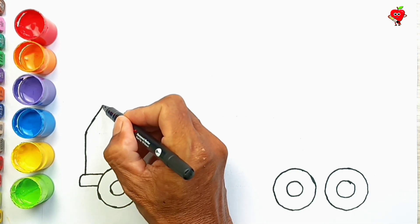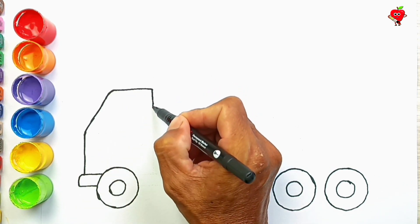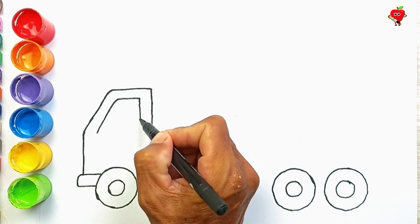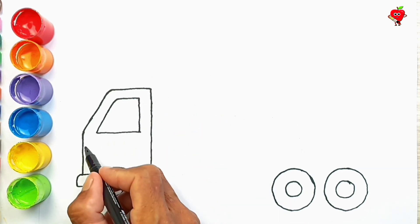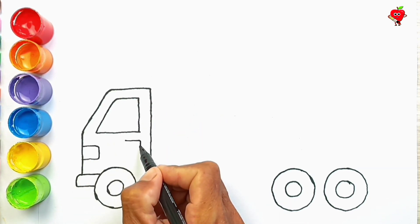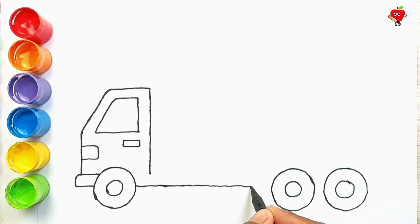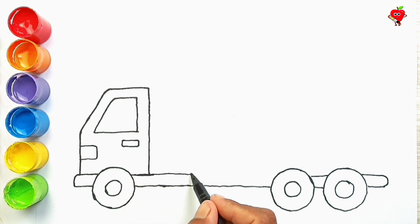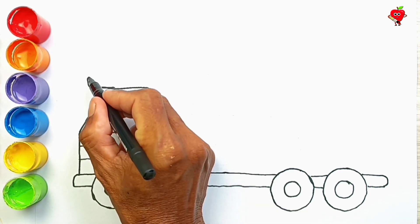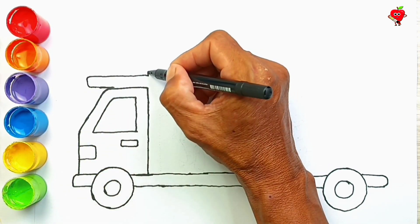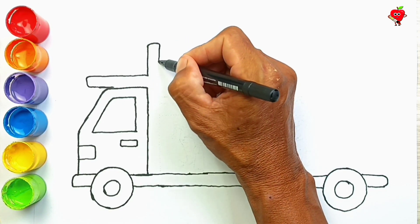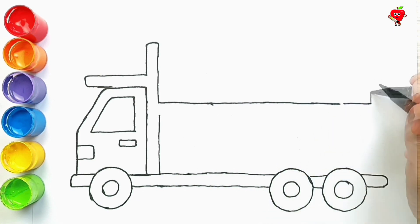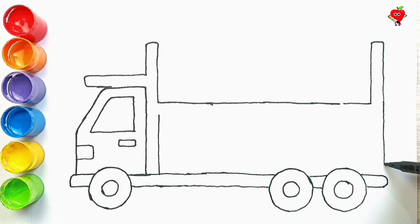Draw the car chassis, cabin, and the entire rear body of the car. Next make a car tub to transport the animals behind it. Well, there are two levels.